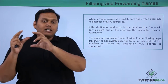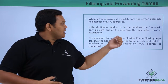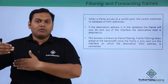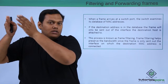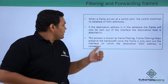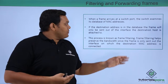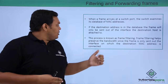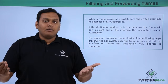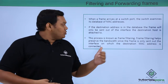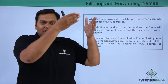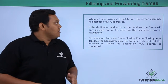For example, if a packet is transported through interface FA 0/1, the destination host's MAC address is looked up in the CAM table, and the frame is forwarded to the matching interface. This process is known as frame filtering, which helps preserve bandwidth since the frame is only sent to the interface that has the destination MAC address information.